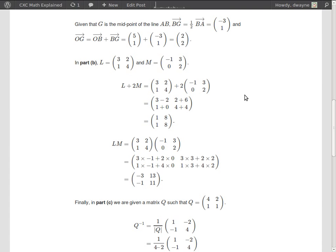Okay, so in the first part we have L plus 2 times M. Now 2 times M would give us negative 2 here, 2 times 3 is 6, 2 times 0 is 0, 2 times 2 is 4.